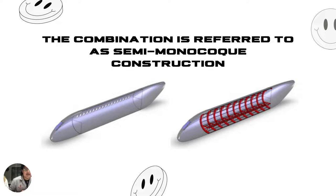The combination is referred to as semi-monocoque construction. Although the addition of the support structure adds to the overall weight of the configuration, it retains its light and stiff characteristics while reacting to the applied load.